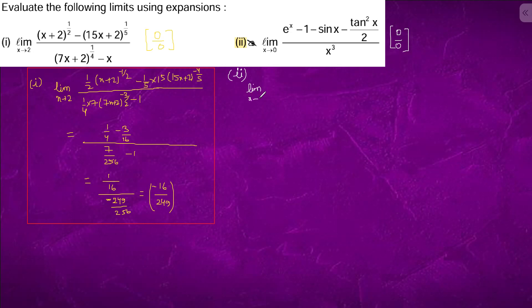Taking the derivative: e to the power of x minus cos x minus 2 tan x sec square x by 2 upon 1 by 16.